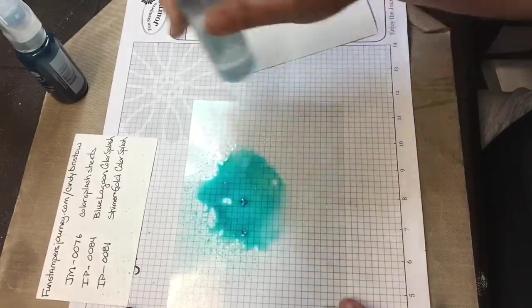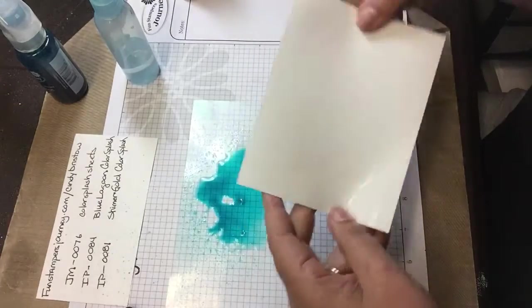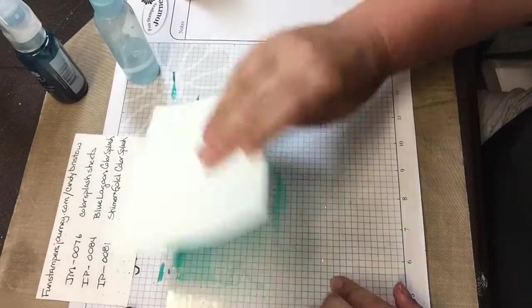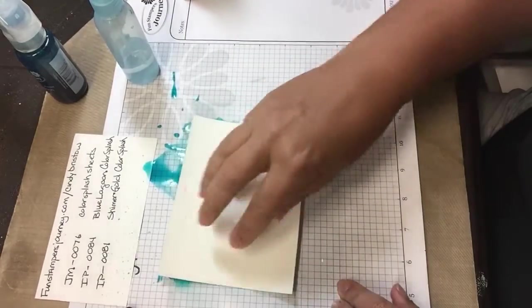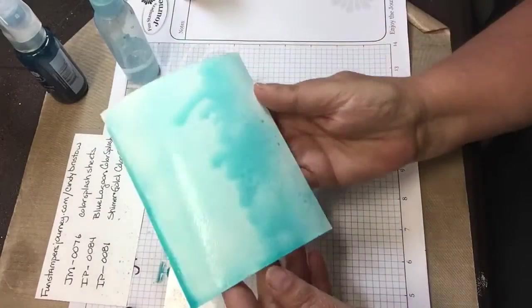And then you take your water bottle and you make a big yummy puddle there. And you take your piece of color splash watercolor paper that you saturated with water and you just stick it in that big pile of the splash.